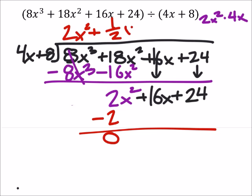Yeah, we're missing 1x. So 1 half x times 4x would give us that 2x squared. Of course, that's not finished.